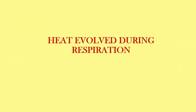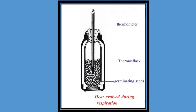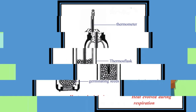We perform another experiment: heat evolved during respiration. Required materials: thermos flask, germinating seeds, thermometer. Take germinating seeds into the thermos flask. Take a one-hole cork and insert a thermometer so that the bulb of the thermometer dips into the sprouts. Close the flask with the cork and record the temperature every 2 hours. Do this for at least 24 hours. By observing the records, we understand that the temperature is increased. So the germinating seeds evolved heat during the respiration process.